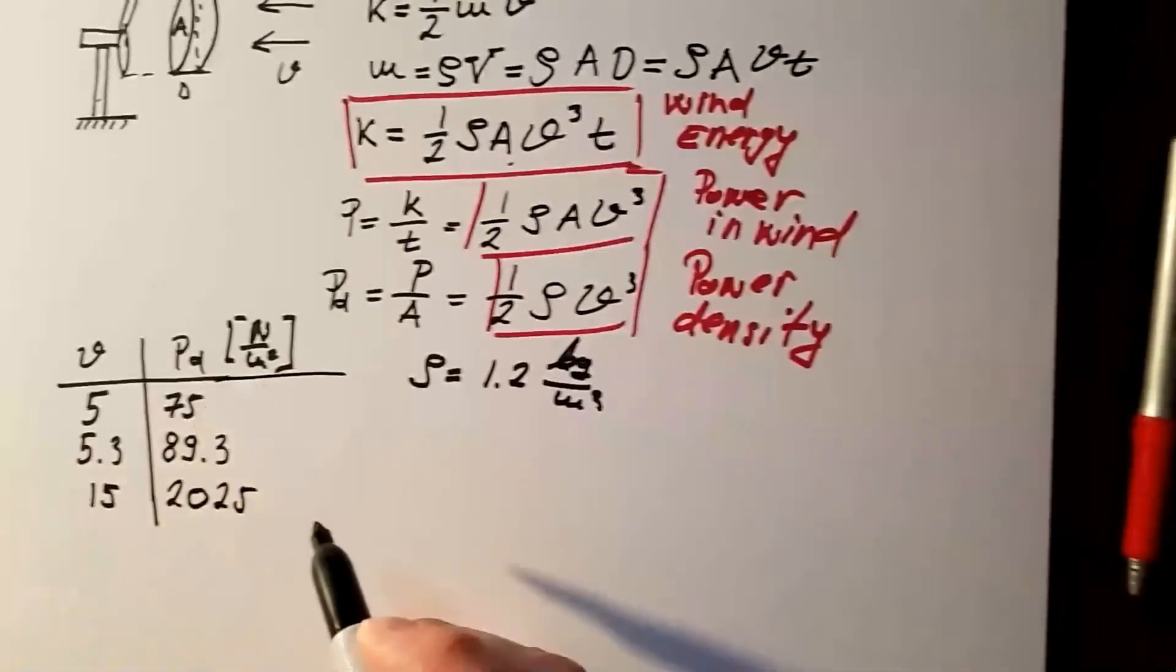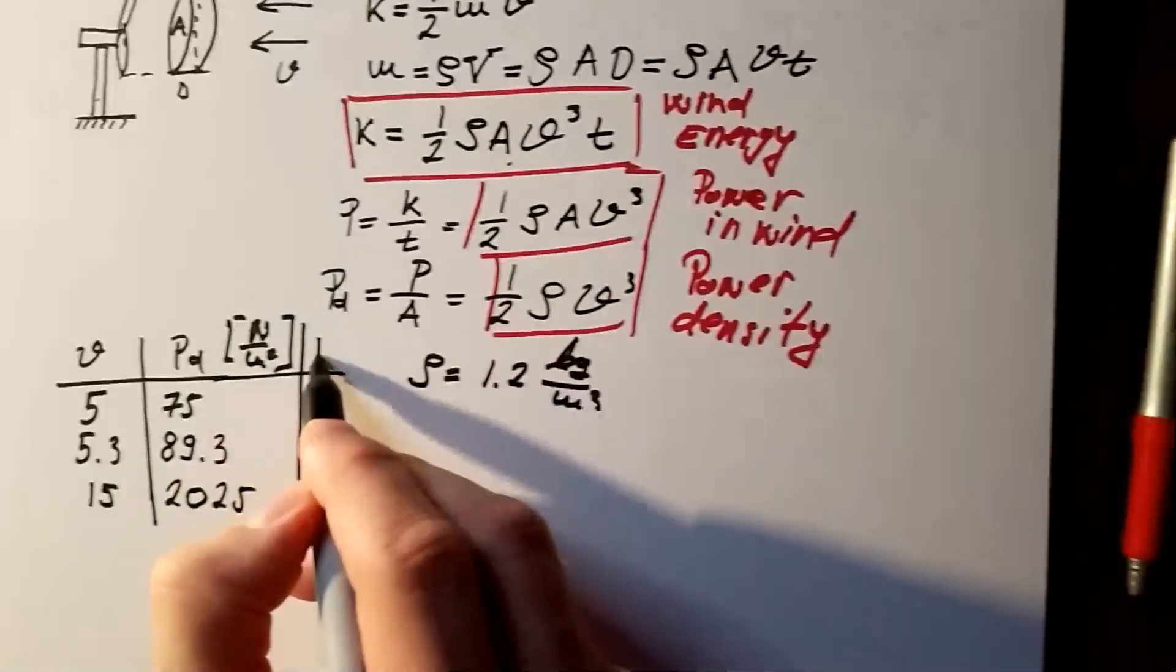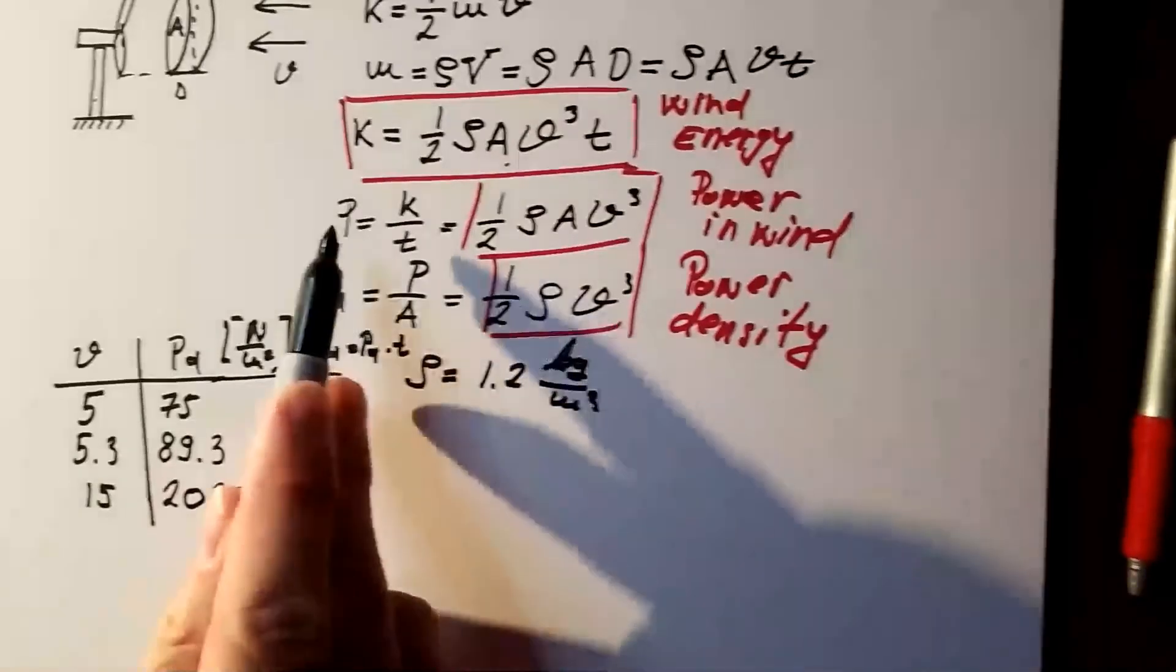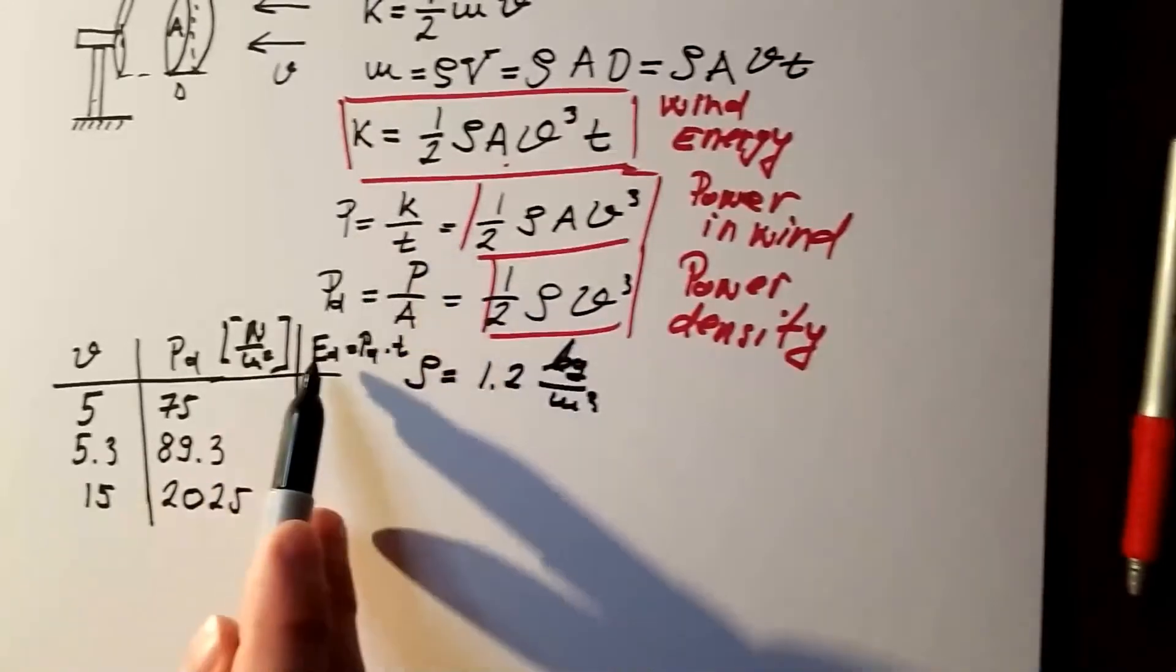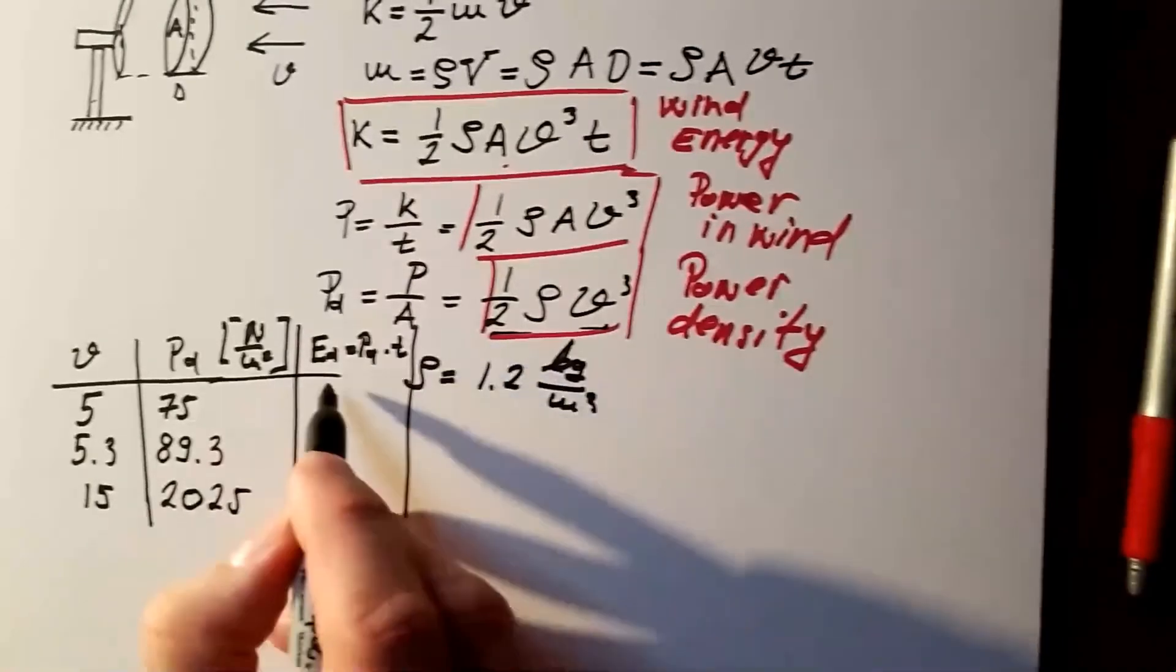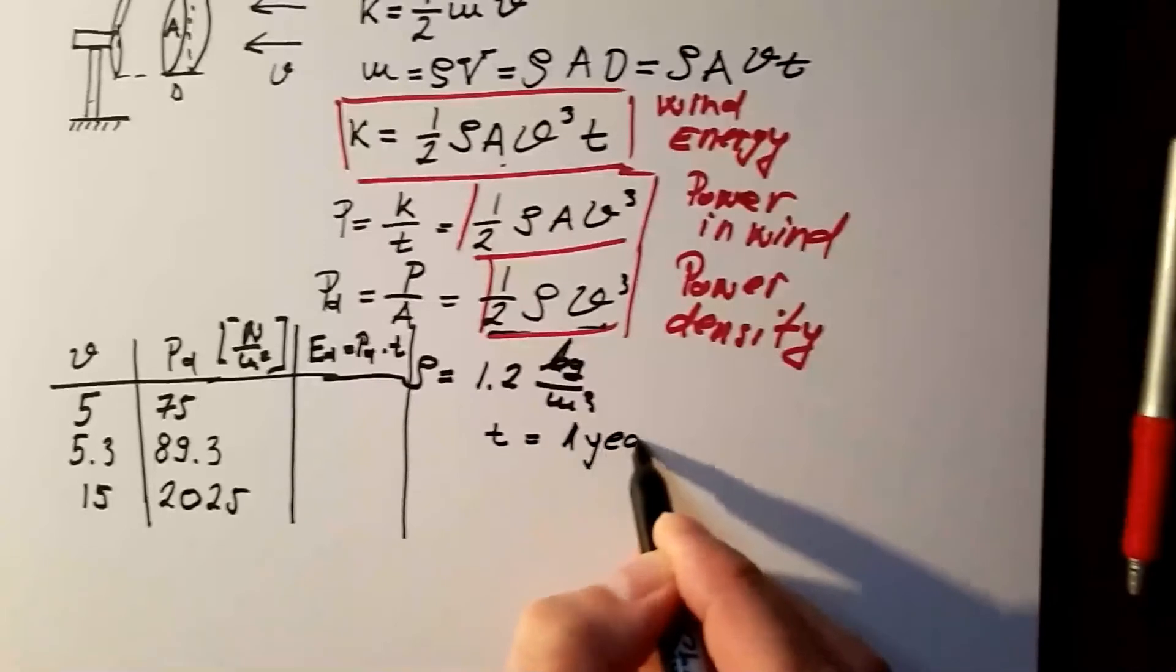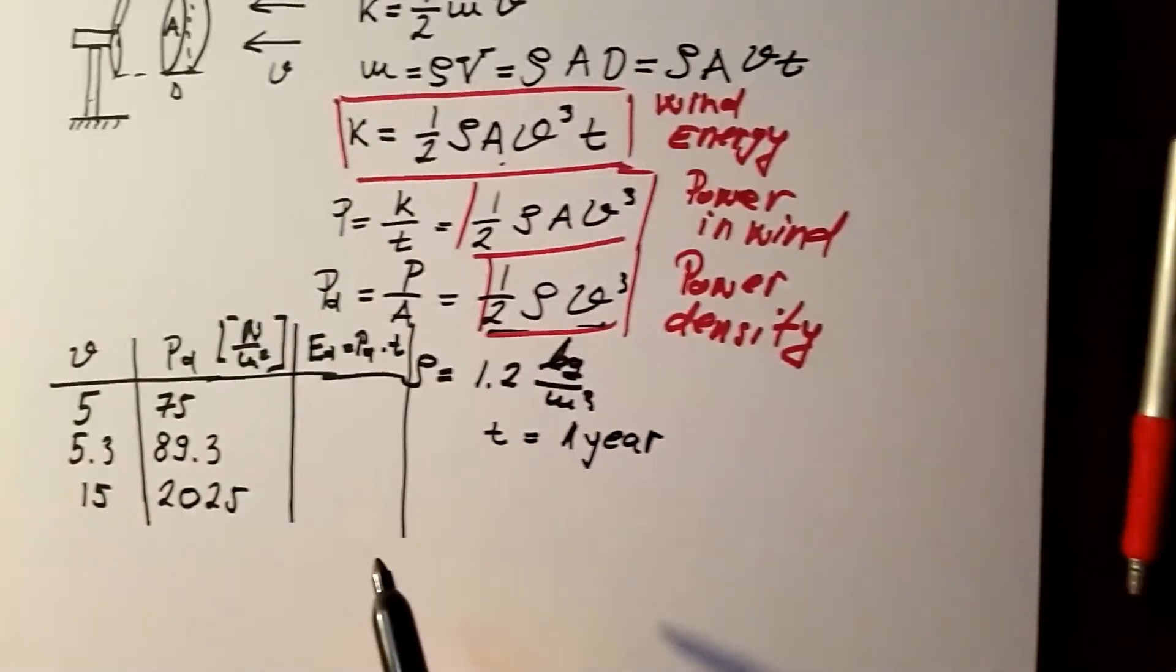Let's just extend this exercise slightly and calculate here also energy density. What would energy density be? Well, it would be power density PD times time, because as I said, power is energy over time, so energy is power times time, which means that energy density would be this expression multiplied with time. And let me calculate this for a time that is 1 year. So, T is 1 year. Now, you can at home calculate how many seconds is in 1 year.